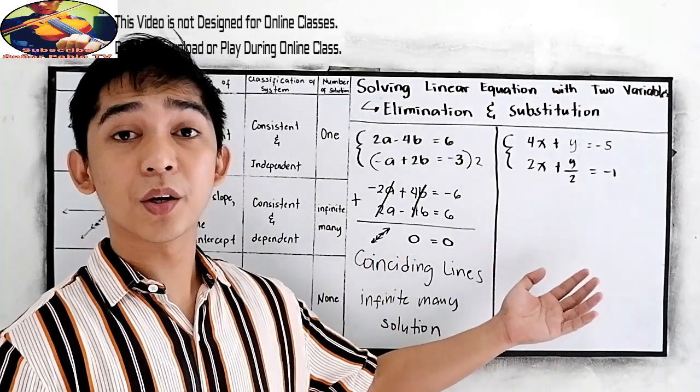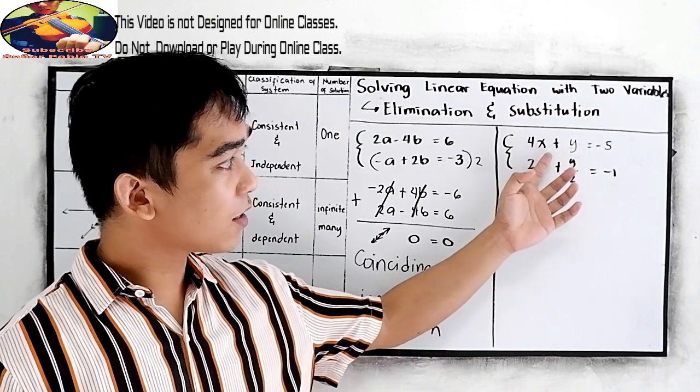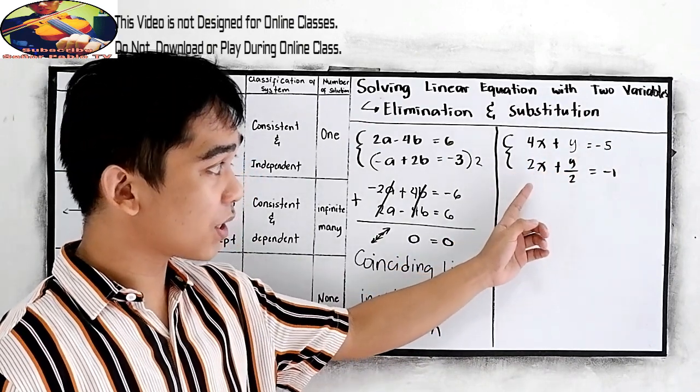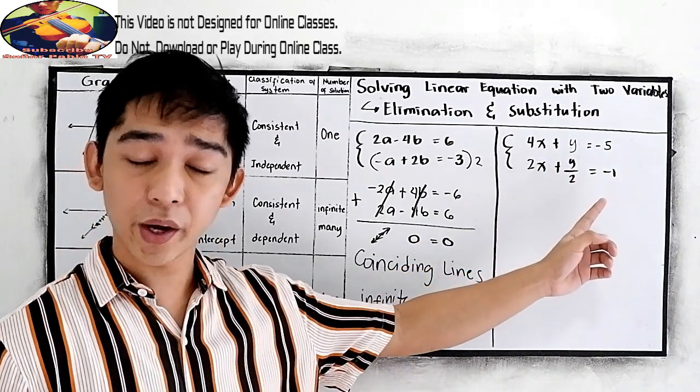And now let's try our example number 2. 4x plus y is equal to negative 5. And the equation 2 is 2x plus y over 2 is equal to negative 1.